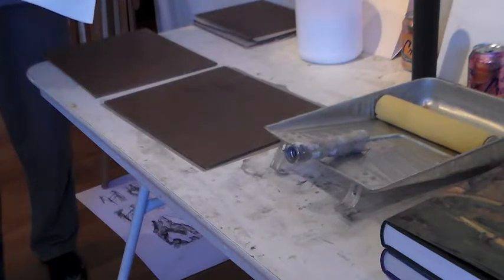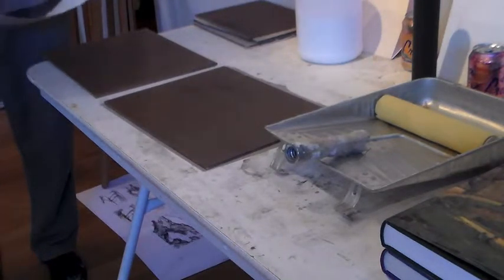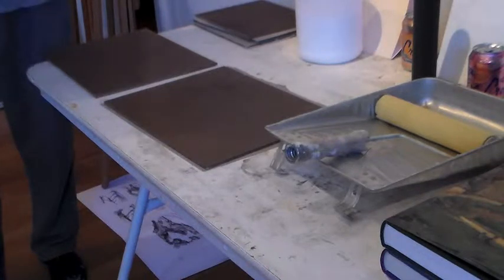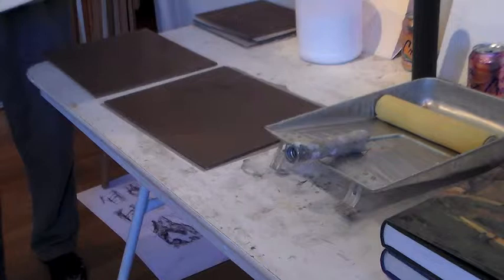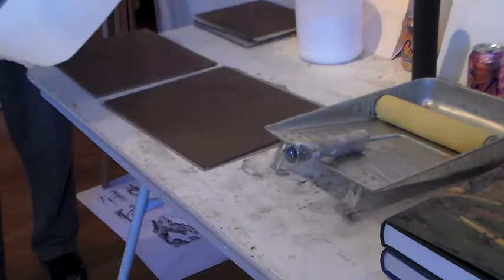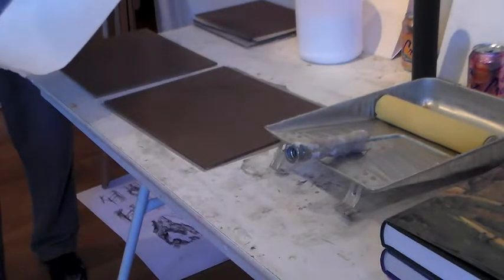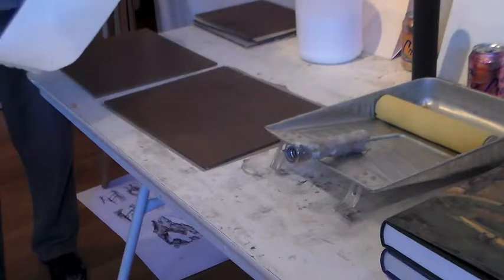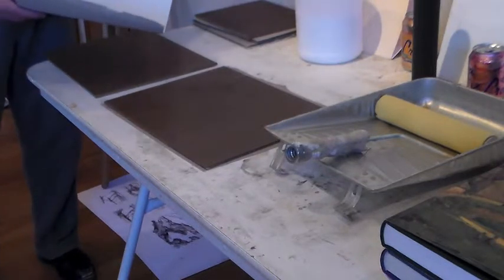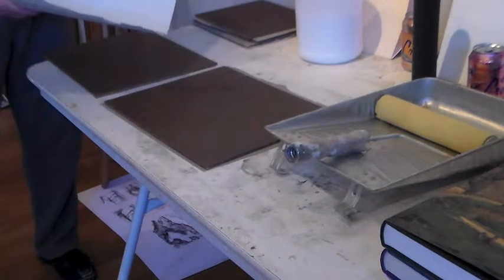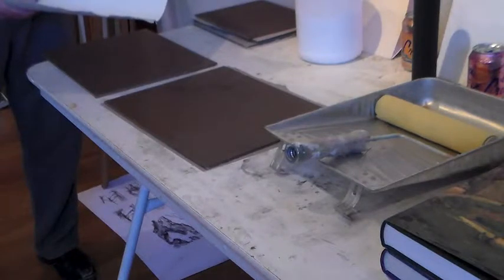For the little paintings, they have a product called 15, and it comes in two primings, a single and a double primed. The single prime has an advantage of being a little more absorbent, a little less slick. The double prime is a little bit more slick, which is great for washes and other things.